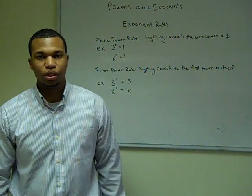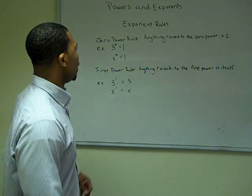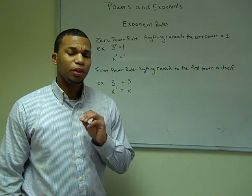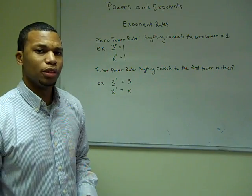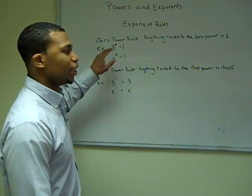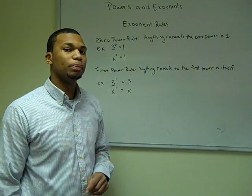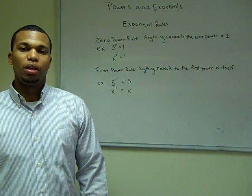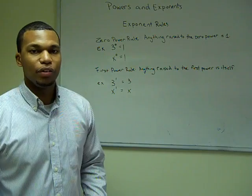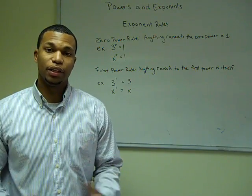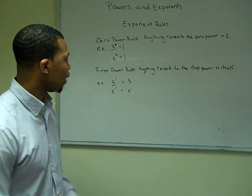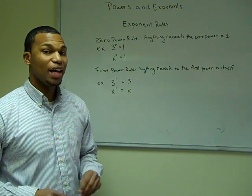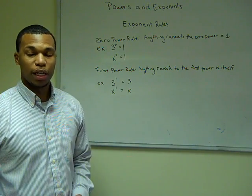Exponents also have rules. The first rule: if you have anything raised to the zero power, it would always give one. So if I had three raised to the zero power, that would equal one. Or if I had x to the zero power, that would equal one. The second rule is that anything raised to the first power is itself. So three raised to the first power would equal three, and x raised to the first power would equal x.